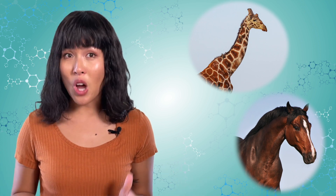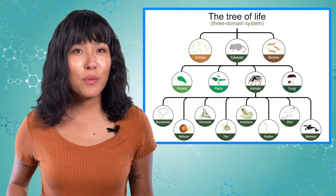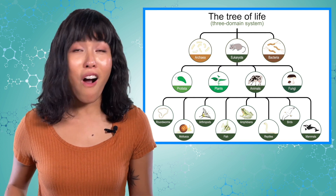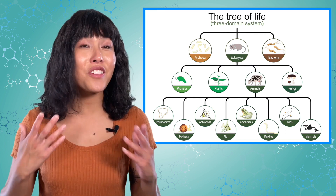The farther back the common ancestor is, the less related the two organisms are. This is why your second cousins are less related to you than your first cousins—you have to go back another generation to your great-grandparents to find a common ancestor. But this family tree of life on Earth could go on and on.